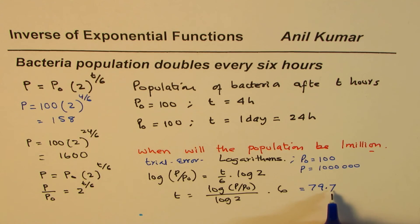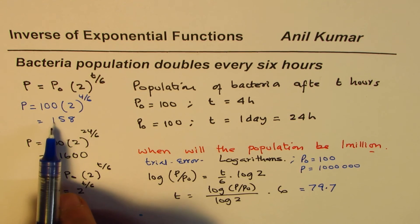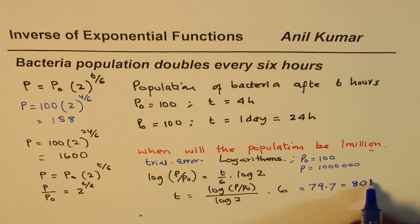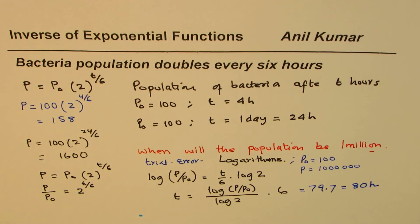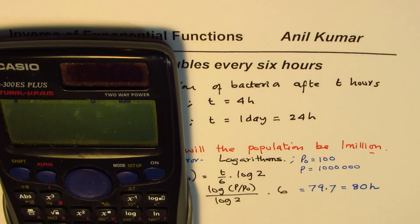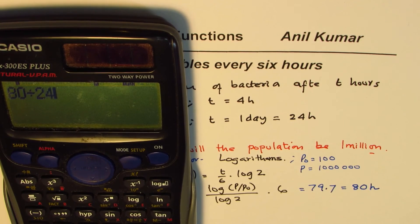So that gives you approximate value 79.7, so it will take about 79.7 hours for the population to reach 1 million. So you could say approximately 80 hours.